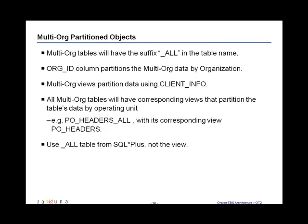The multi-org partitioned objects — the multi-org tables — all have a suffix of underscore all, and the org id column partitions the multi-org data by organization. Multi-org views partition data using client info, and all multi-org tables have corresponding views that partition the table's data by the operating unit. For example, PO_HEADERS_ALL has a corresponding view called PO_HEADERS in the app schema, and it partitions the data by the org id.